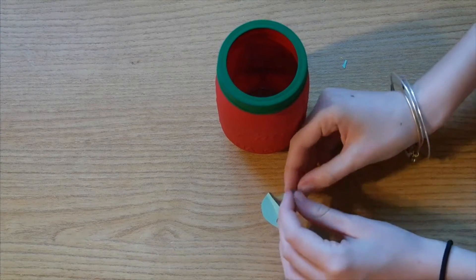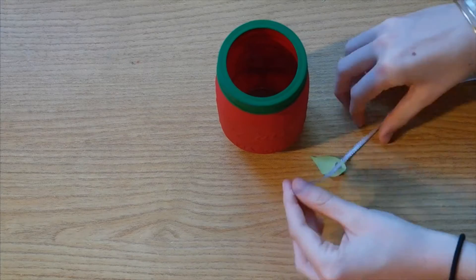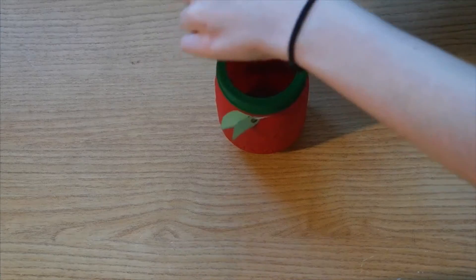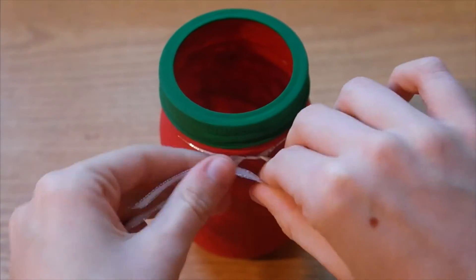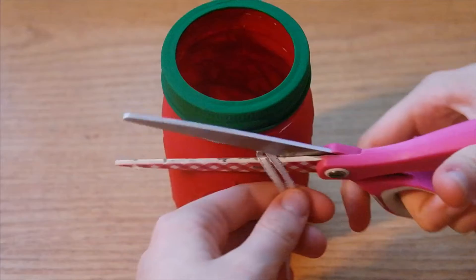Take some string, ribbon, or you can also use twine, and thread it through the holes in your paper leaves. Tie that onto the top of your jar and cut off the extra string. Screw that on your top and there you have a jar that looks like a little apple.